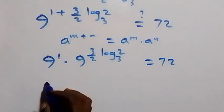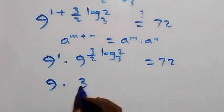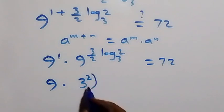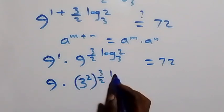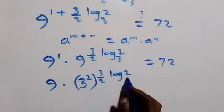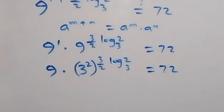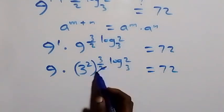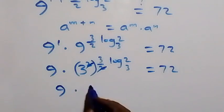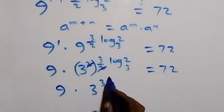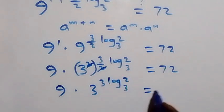We can write 9 as 3 squared, raised to power (3/2) log 2 to base 3. The powers multiply and the 2's cancel, giving us 9 times 3 raised to power (3 log 2 to base 3) equals 72.